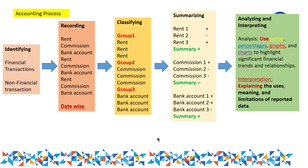This was the definition of accounting. Step one: identifying — whether transactions are financial character; step two: recording by date; step three: classifying; step four: summarizing; step five: analyzing using ratios, graphs, and percentages; step six: interpreting — explaining the meaning, usage, and limitations. Remember that analyzing and interpretation are two sides of the same coin — analyzing without interpretation is useless, and interpretation is not possible without analyzing.